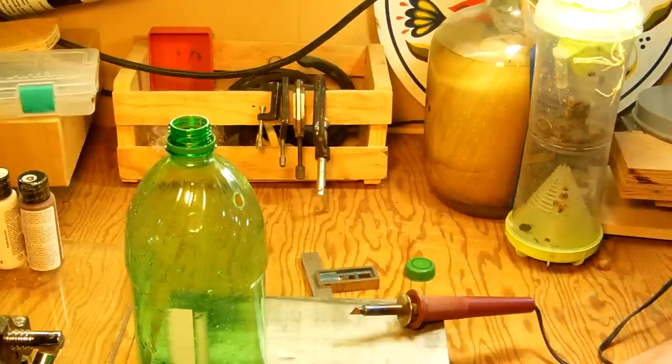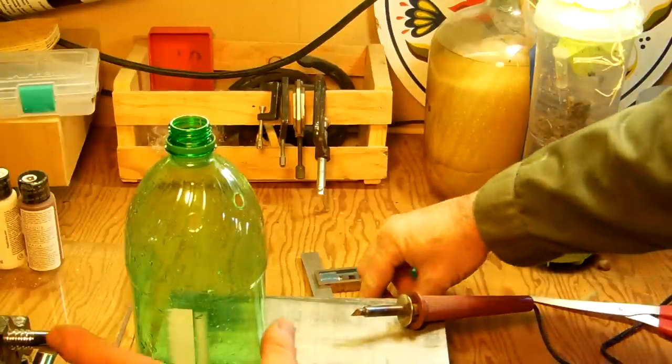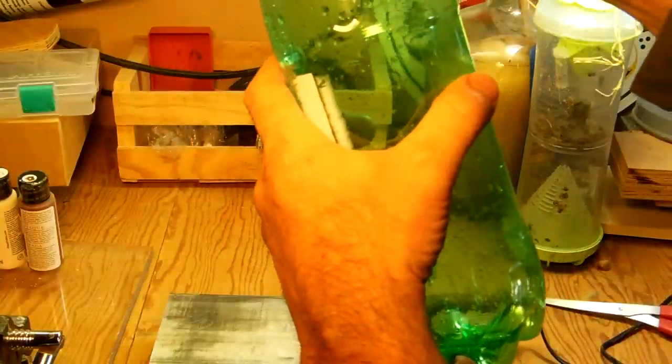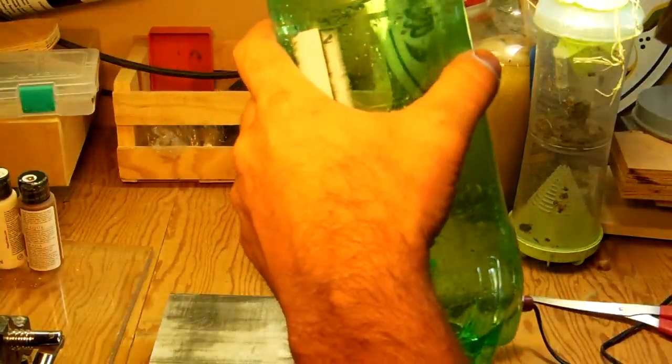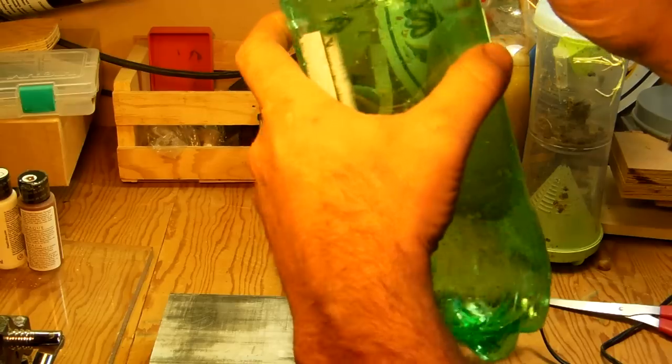And like I said, don't worry if you cut your holes too big. Just cover it up with a little bit of tape here. What you do, once you get your hole done, just go ahead and just put your straw in there. Make sure it goes all the way in there flush. You want it in there flush.